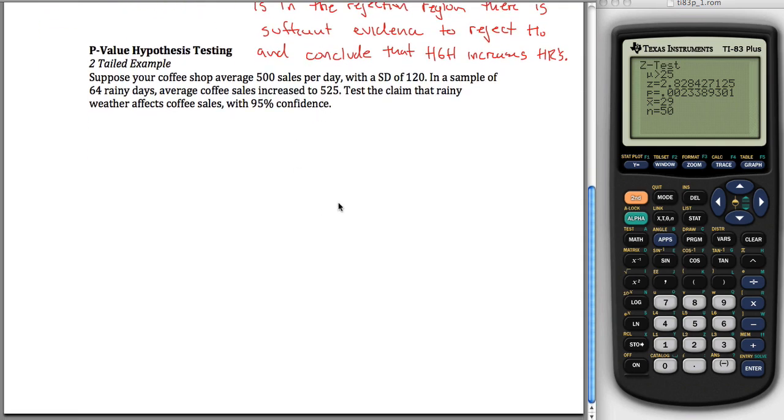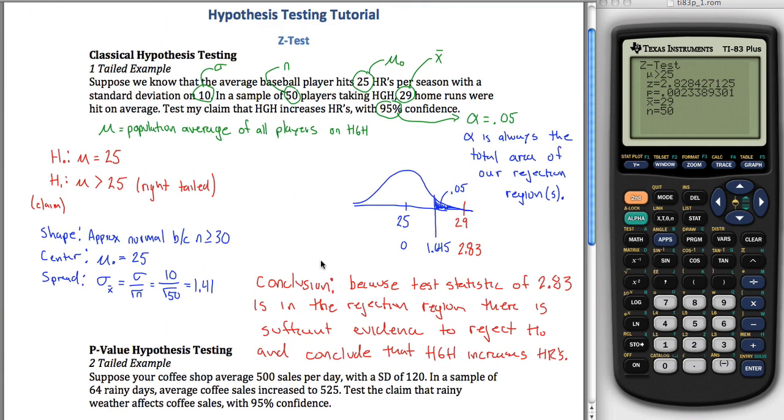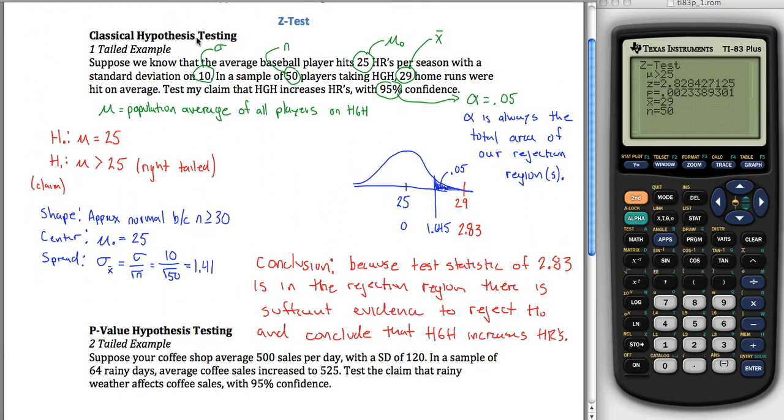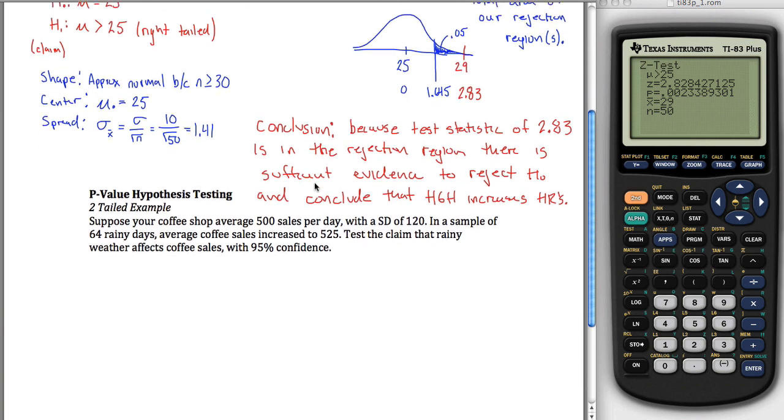Here's an example of hypothesis testing, but now what we're going to do is use the p-value hypothesis testing. So really what I want you to understand is two different methods, the classical hypothesis testing method and the p-value hypothesis testing method. So maybe watch the classical hypothesis testing video first, and then this one, the p-value hypothesis testing, and I'll be able to reference back and forth between the differences. Okay, anyways, for p-value hypothesis testing, things start out kind of the same.